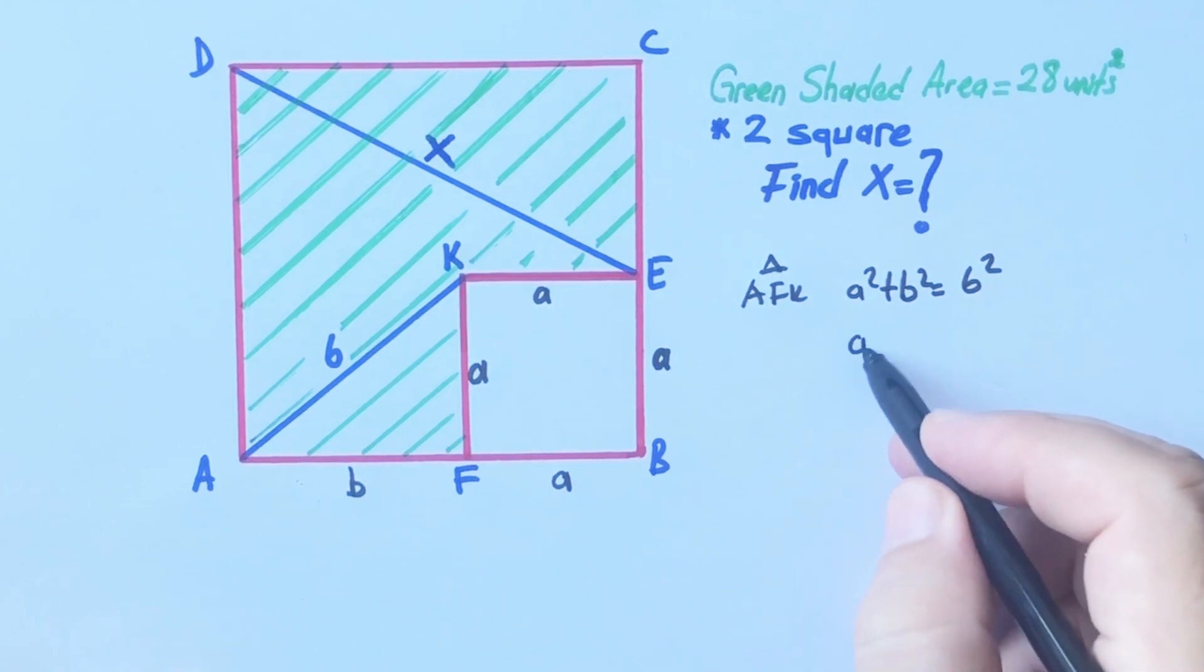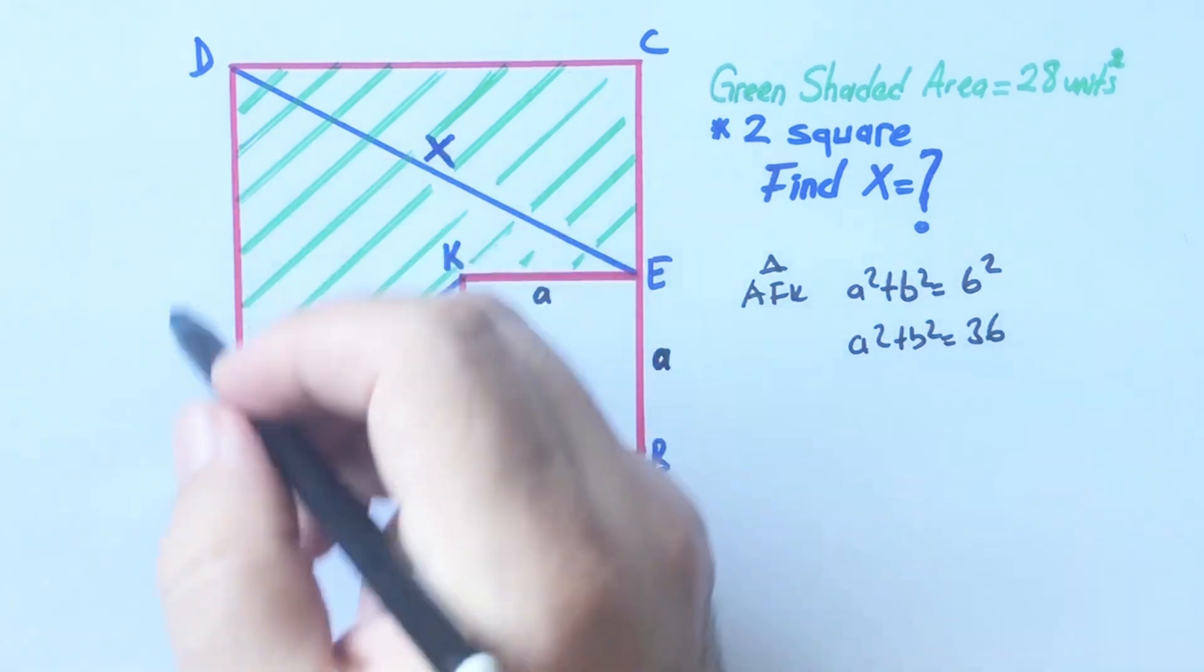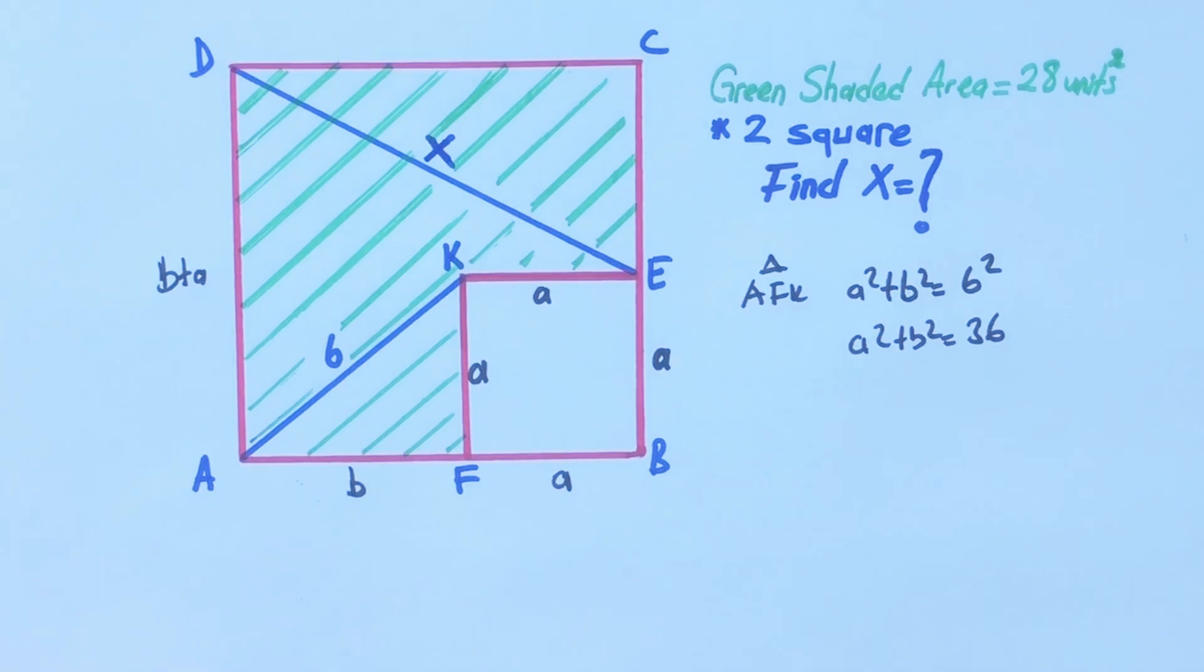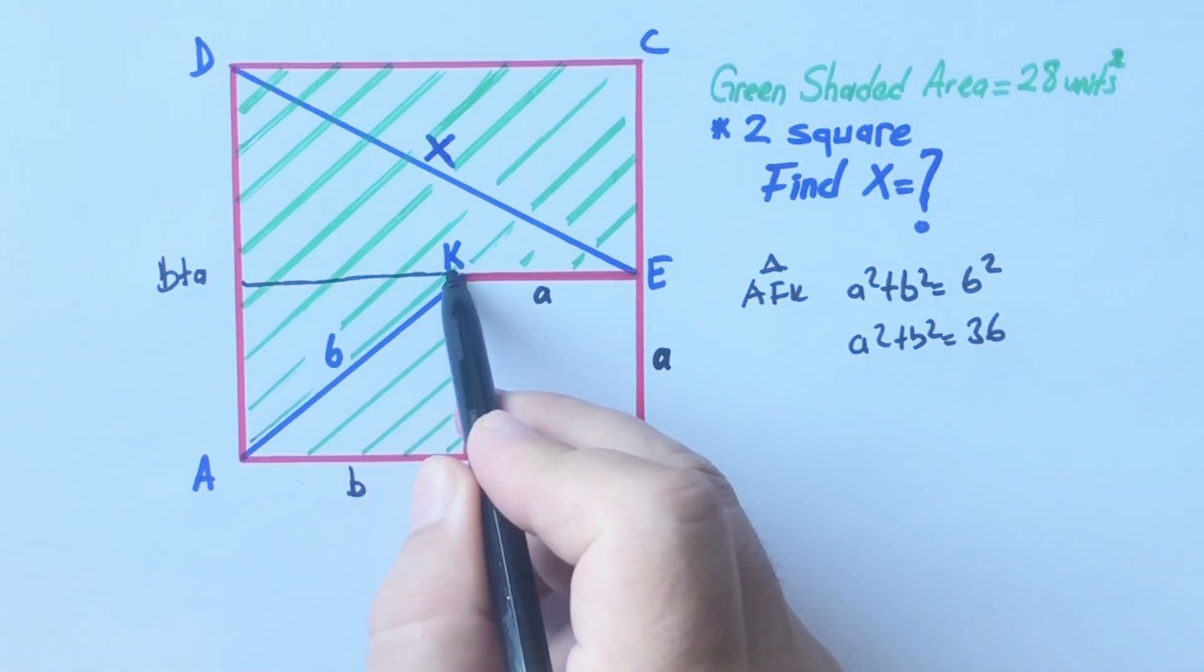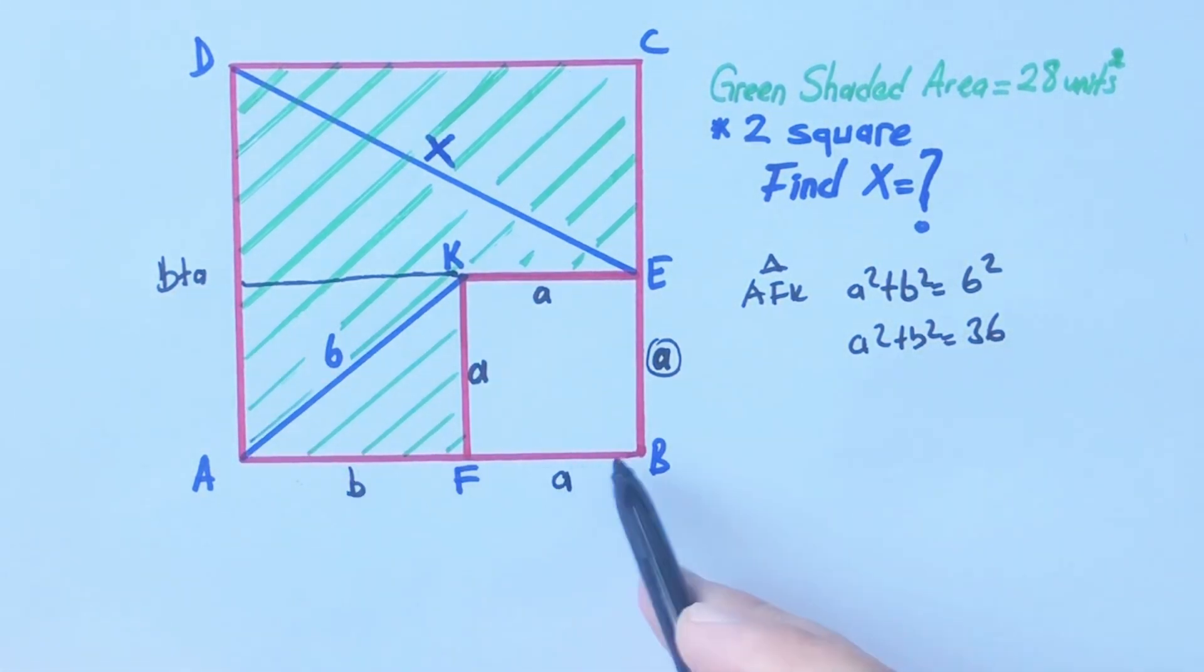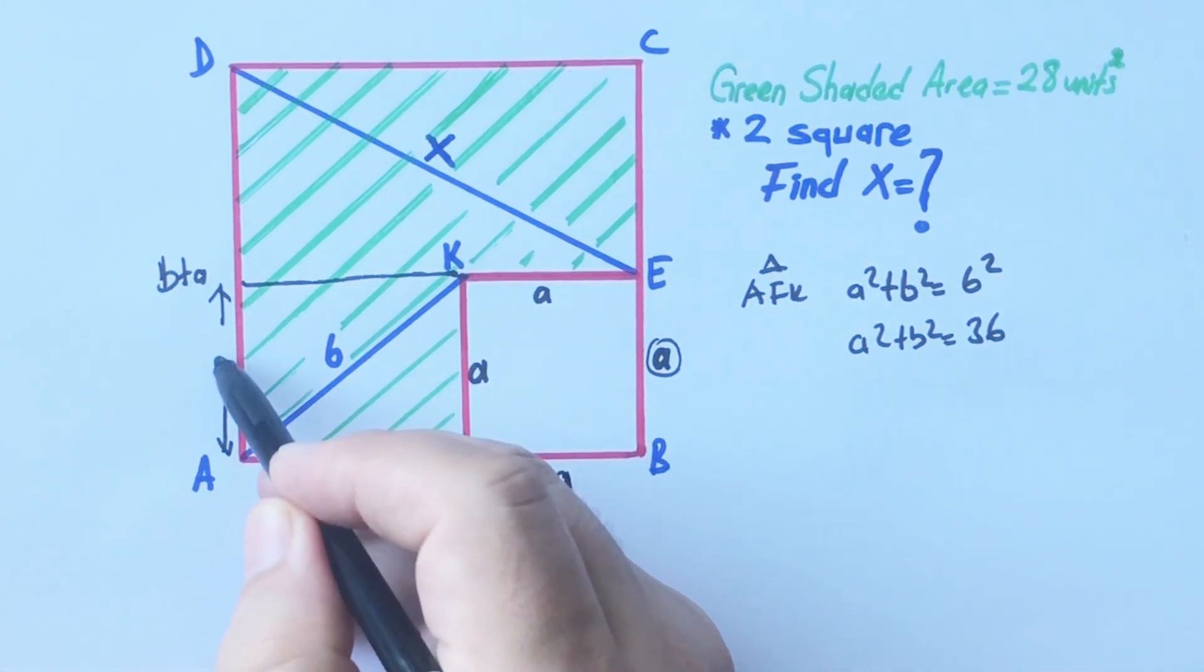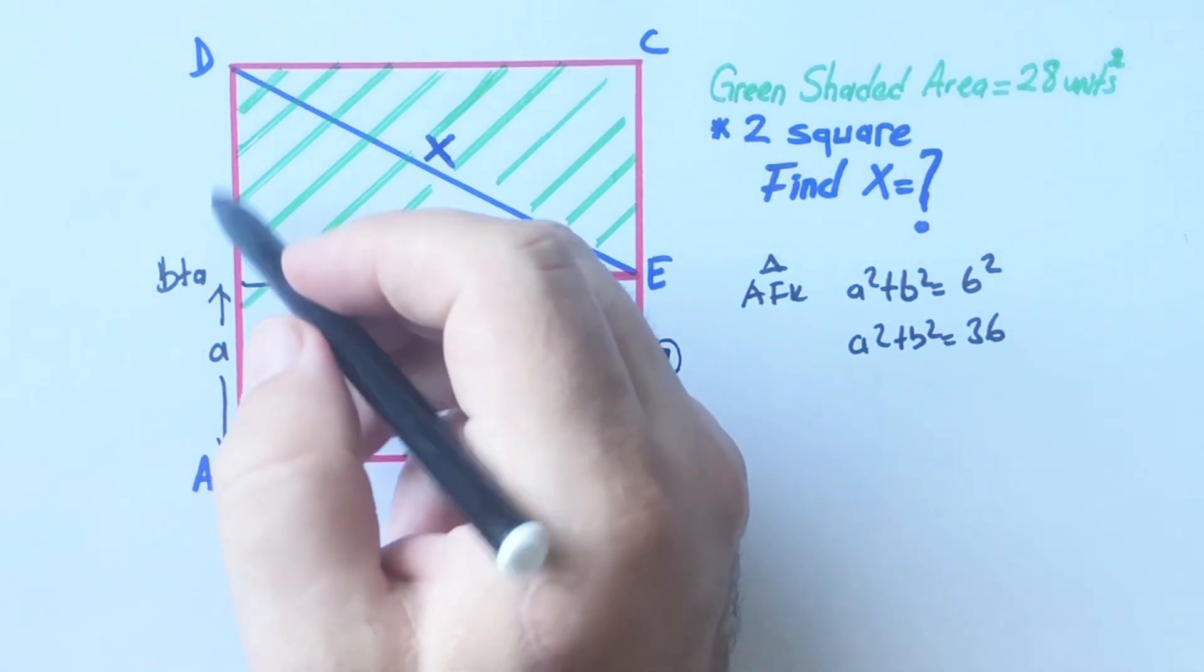Therefore a squared plus b squared equals 36. This side is b plus a, therefore this side is also b plus a. If we extend here, if here is a units this is a rectangle, right? So this side must be a units and b units left here.